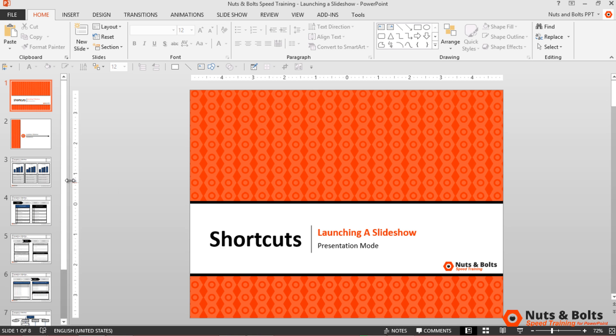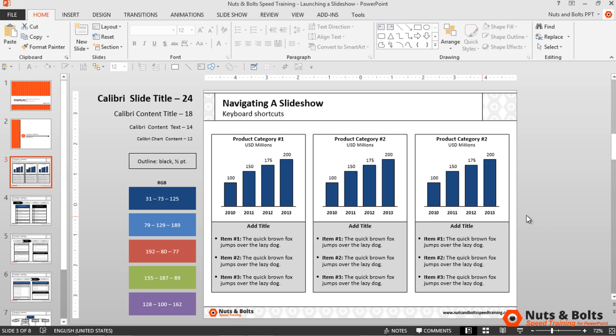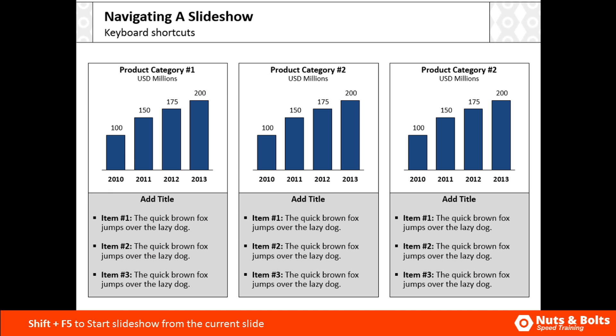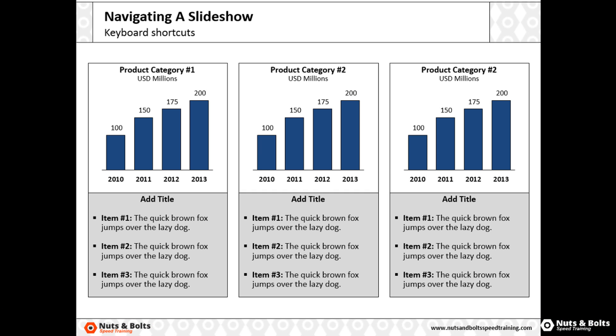You can also start a presentation from the slide you're working on with Shift+F5. So Shift+F5 and again I move to presentation mode starting with the slide that I'm working on, which is useful when you're building your presentation and you want to double check what the slide looks like before you move on to the next slide.